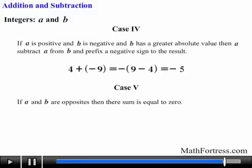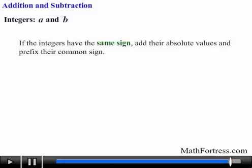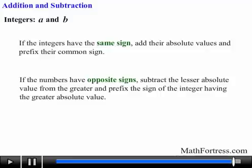If a and b are opposites, then their sum is equal to 0. For example, 2 plus negative 2 is equal to 0. In a nutshell, when adding or subtracting integers, if the integers have the same sign, add their absolute values and prefix their common sign. If the numbers have opposite signs, subtract the lesser absolute value from the greater and prefix the sign of the integer having the greater absolute value.